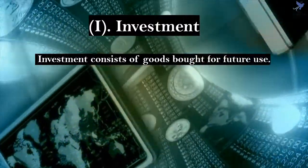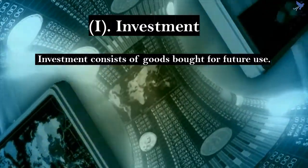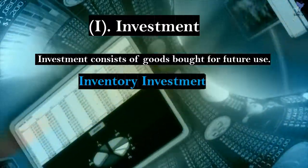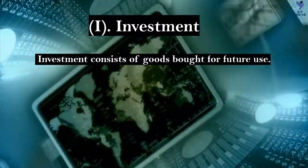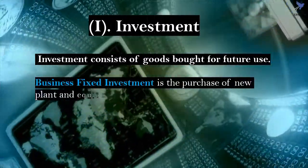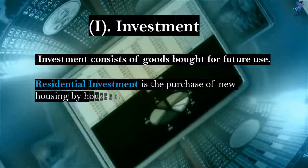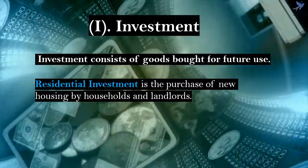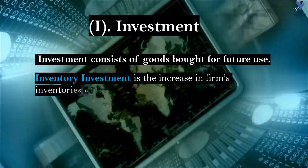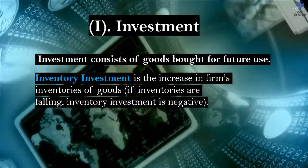Investment consists of goods bought for future use by investors. Investment is also divided into three subcategories: business fixed investment, residential fixed investment, and inventory investment. It is also the addition to the existing physical stock of capital. Business fixed investment is the purchase of new plants and equipment by firms. Residential investment is the purchase of new housing by households and landlords. Inventory investment is the increase in a firm's inventory of goods. If inventories were falling, inventory investment is negative.